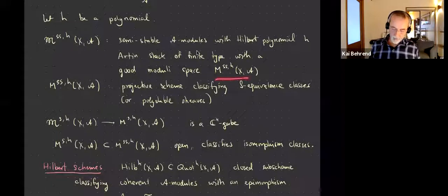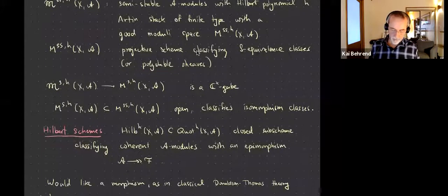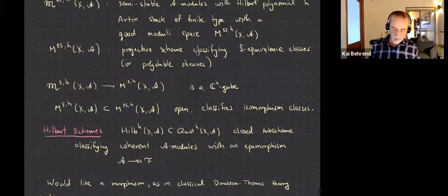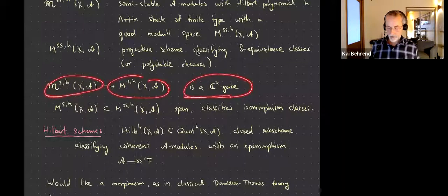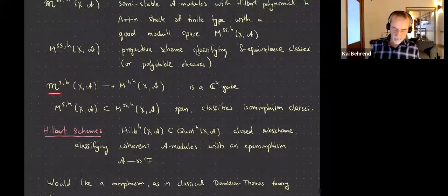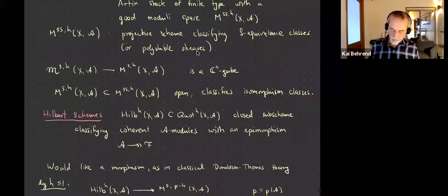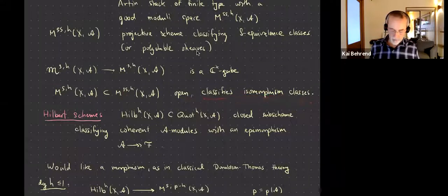We get moduli spaces: fix a polynomial H, and the stack of semi-stable A-modules with Hilbert polynomial H is an Artin stack of finite type with a good moduli space. The moduli space M is a projective scheme classifying S-equivalence classes (or equivalently poly-stable modules). If you pass to the stable objects, the map from the stack to the moduli space is a C*-gerbe. The stable locus is open in the semi-stable ones and classifies isomorphism classes.